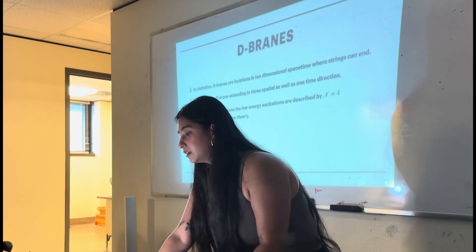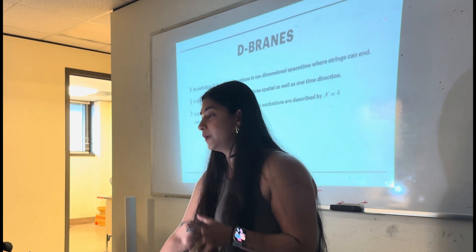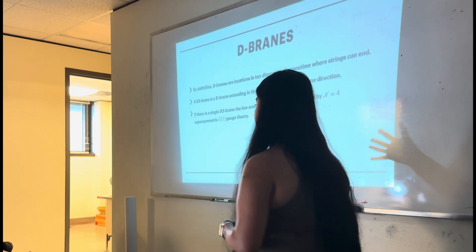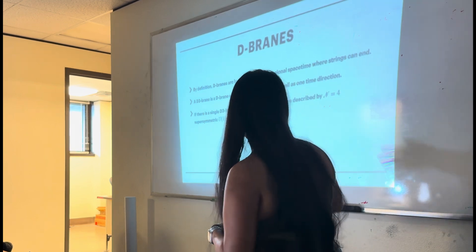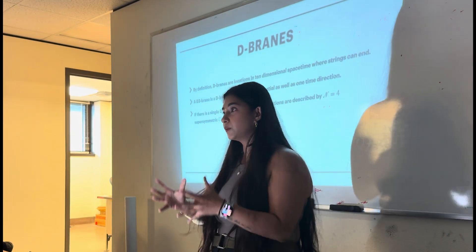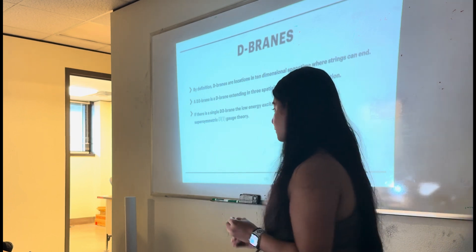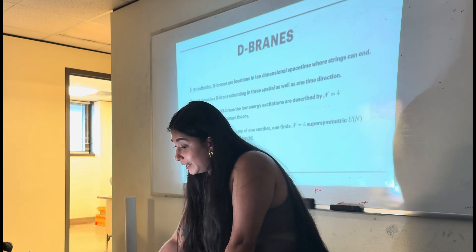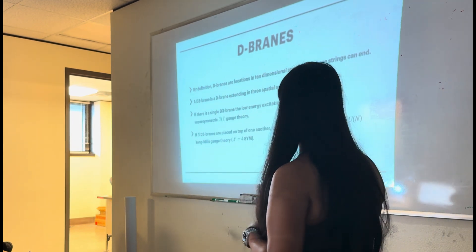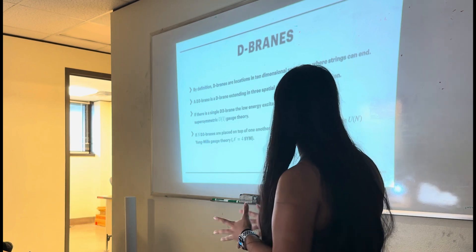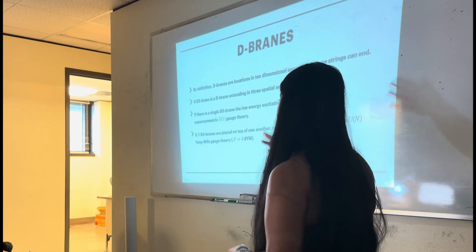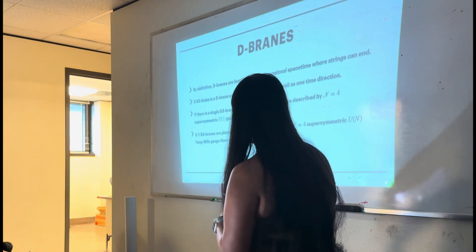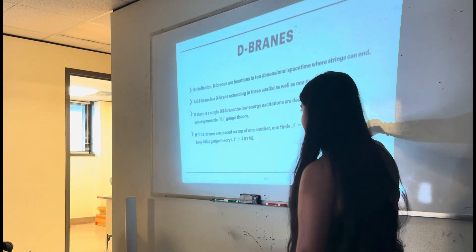So a D-3-brane is a D-brane extending in three spatial as well as one time direction. Similarly, a D-4-brane will extend in four spatial and one time direction. Now, if we have a single D-3-brane, the low-energy excitations are described by N equals four supersymmetric U(1) gauge theory. So what I mean by N equals four, it means the theory is supersymmetric, maximally supersymmetric, because we have four supersymmetric charges.